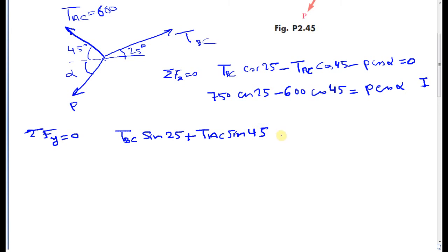Sine 45 negative P sine alpha is equal to 0. I can rewrite it again: TBC is 750 sine 25 plus 600 sine 45 is equal to P sine alpha. I call this equation equation number two.